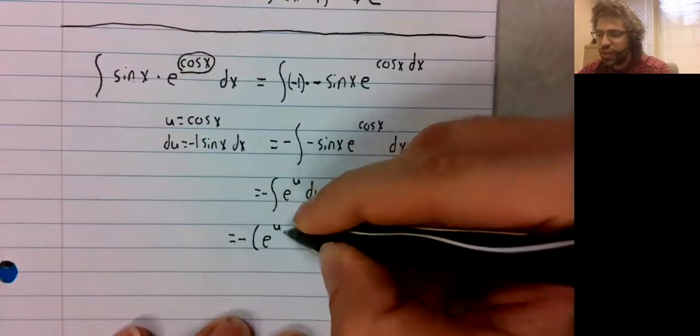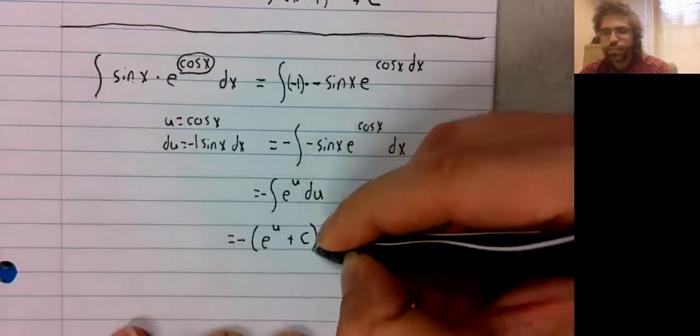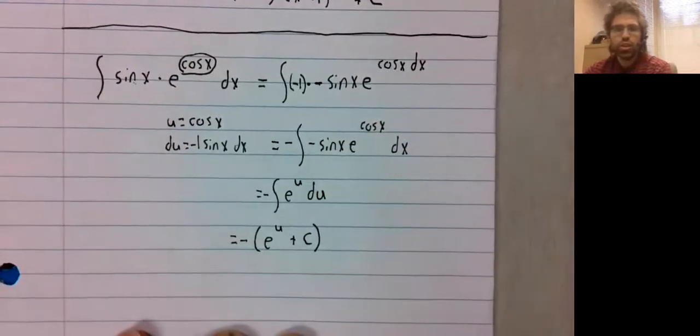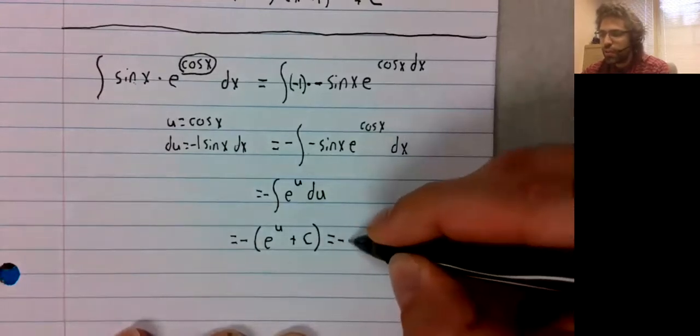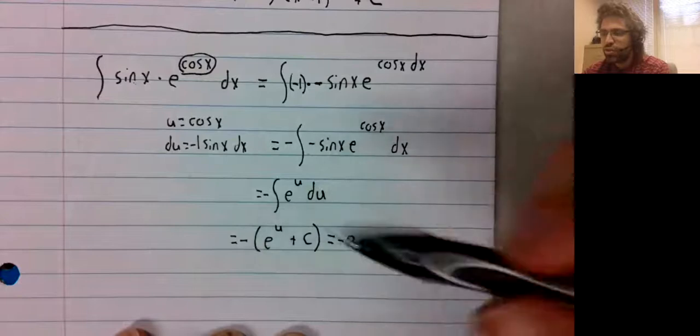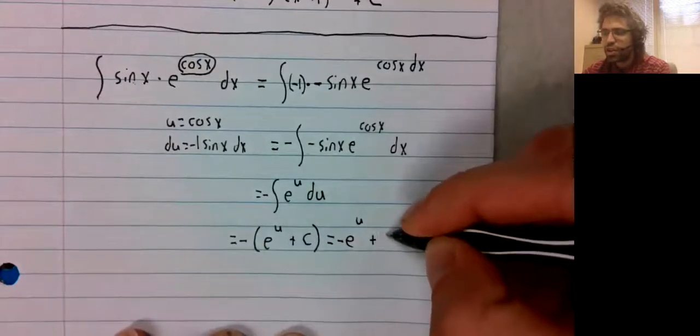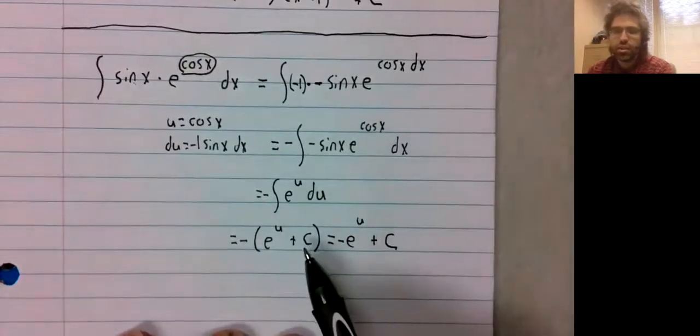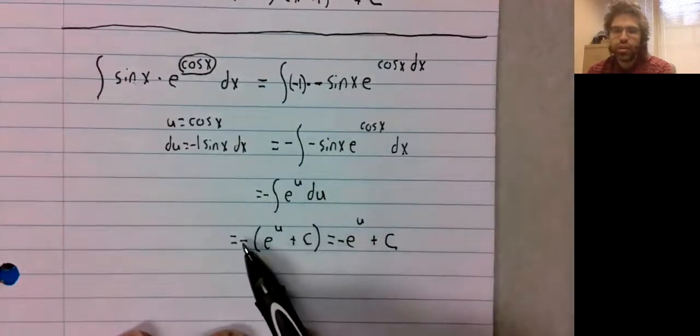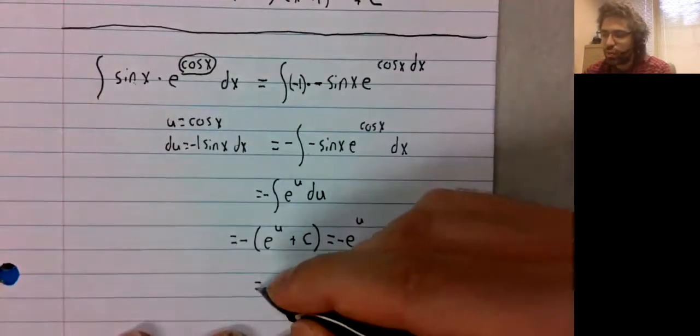The antiderivative of e to the u is e to the u. Again, when we distribute this constant, we don't attach it to c. If c is completely arbitrary, then a negative c is completely arbitrary.